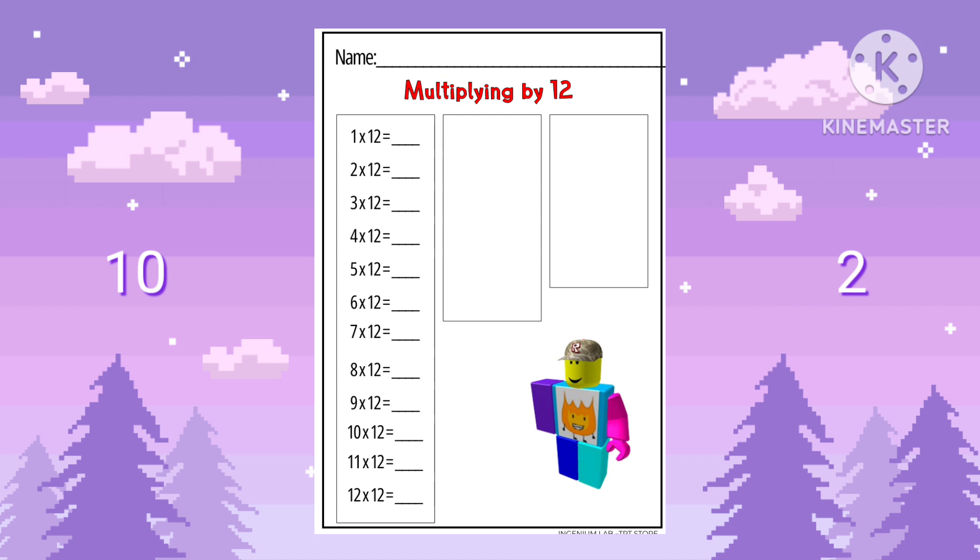To do the 12s, we're going to use the split strategy. We're gonna split up the 12 into a 10 and a 2 because 10 plus 2 equals 12 and it's much easier to multiply by 10 and to multiply by 2. All we have to do is add them up when we're done.